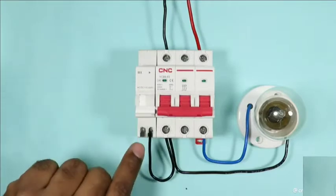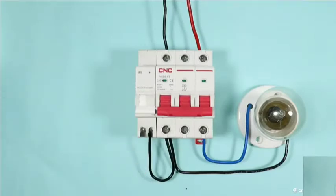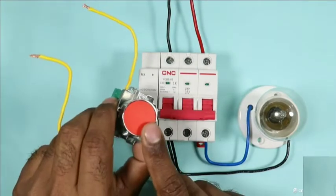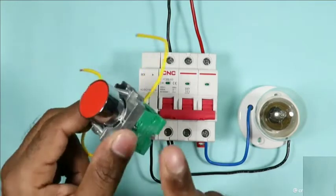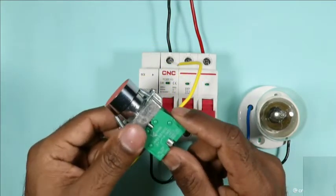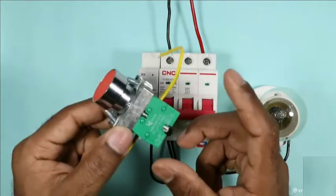In this second terminal of shunt coil, you have to provide phase supply. You have to use this type of push button and the contact used below the push button must be NO contact, means normally open.